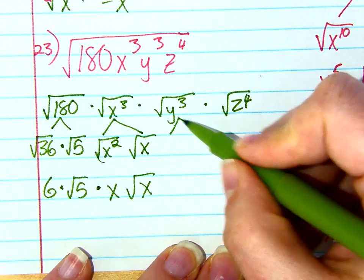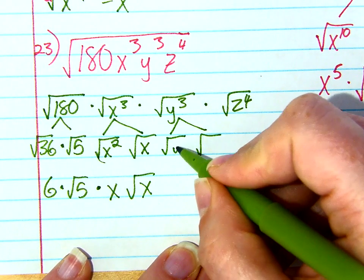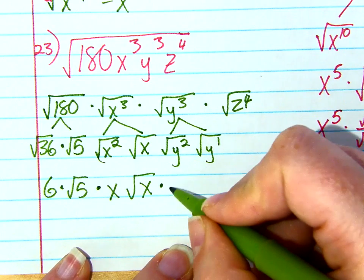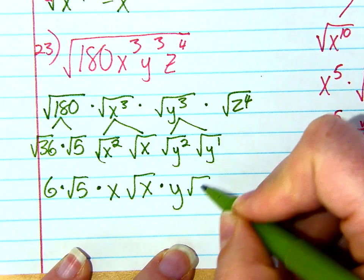Now do the same thing with y to the third. You've got to break that into what? Y squared and y to the first. So square root of y squared is y. And then just bring down that square root of y to the first.